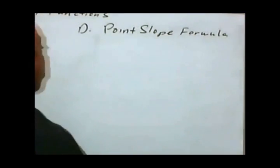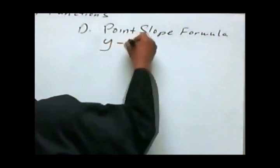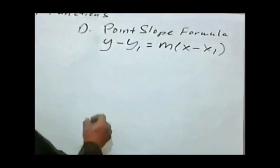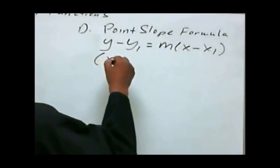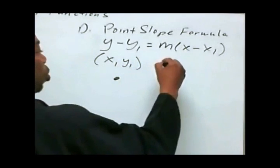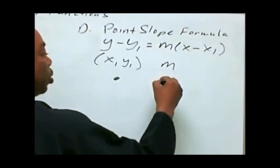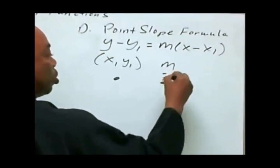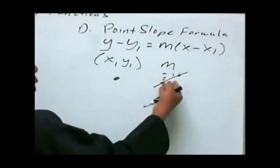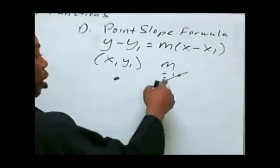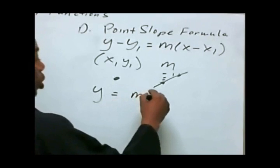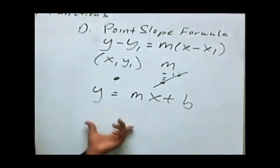Now let's look at the point-slope formula. The point-slope formula is y minus y₁ equals m times x minus x₁. It takes a point and a slope — which tells you the rise and run — that creates a line, and it gives you the equation of that line in the form y equals mx plus b.